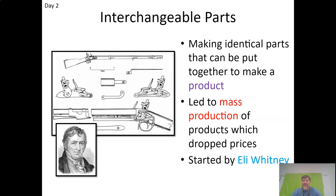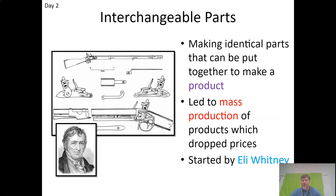Interchangeable parts is something that is necessary to lead to mass production. Interchangeable parts started by Eli Whitney — started in the United States by Eli Whitney. He's really a proponent of it. He's not the inventor of this idea, but he was a strong proponent of this kind of manufacturing. The purpose here is the idea that if you can manufacture all these parts exactly identically the same, then if one breaks, you can just go get another one and put it on. That was not the case back then — not because they didn't have the idea, but they didn't have the machining, the ability to make things that precise.